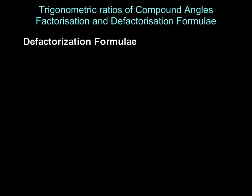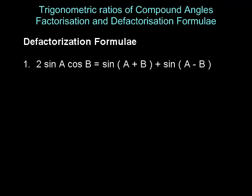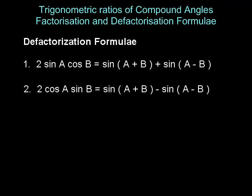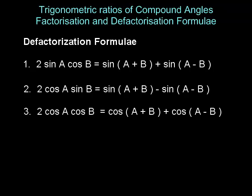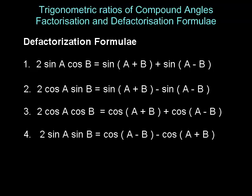The defactorization formulae are: (1) 2 sin A cos B is sin of A plus B plus sin of A minus B; (2) 2 cos A sin B is sin of A plus B minus sin of A minus B; (3) 2 cos A cos B is cos of A plus B plus cos of A minus B; (4) 2 sin A sin B is cos of A minus B minus cos of A plus B. Remember, it is cos of A minus B minus cos of A plus B, and not otherwise.